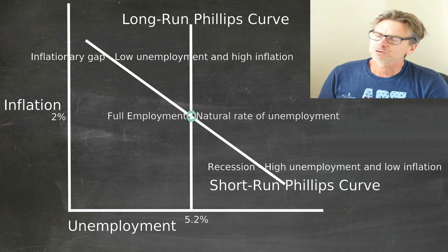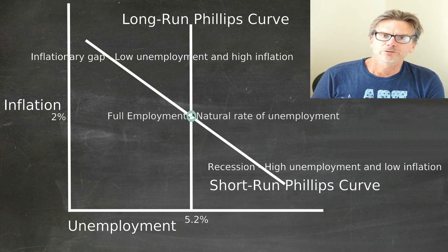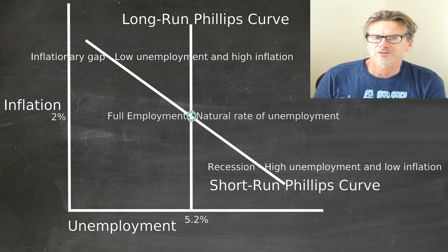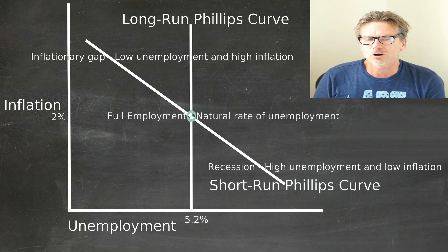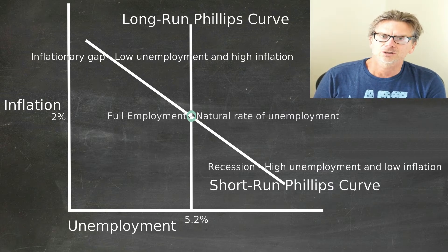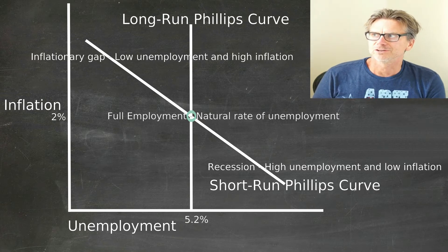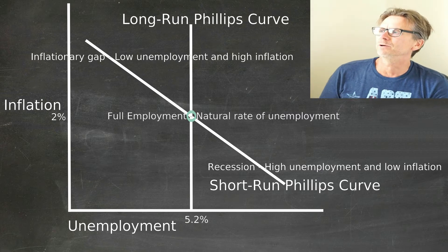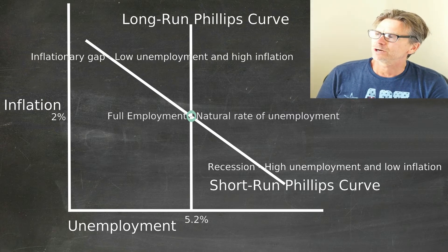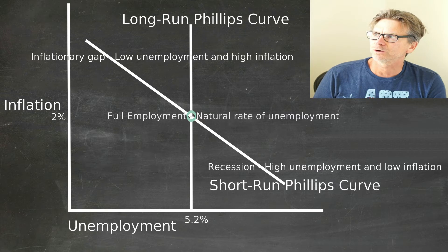The inflation rate — some people say the natural rate of inflation is 2%. That's not really a natural rate of inflation, but it's usually the target the Fed tries to go for. When you have full employment and a natural rate of unemployment, you're at equilibrium, and this is where the long-run Phillips curve settles.